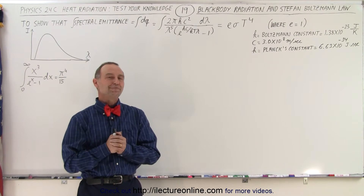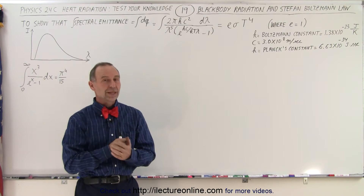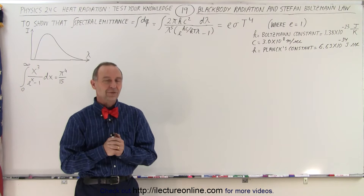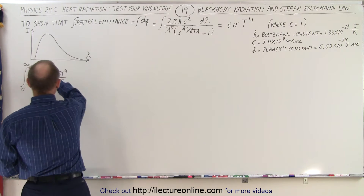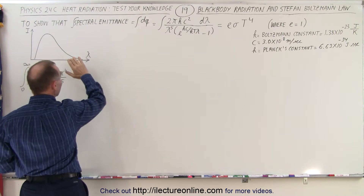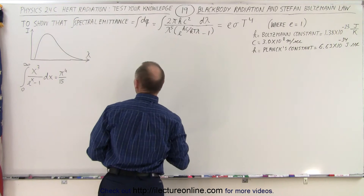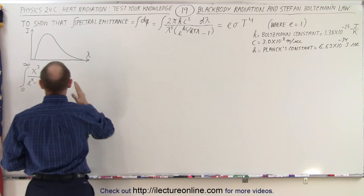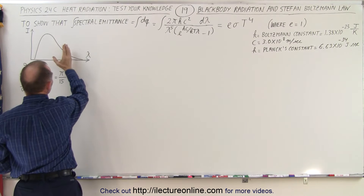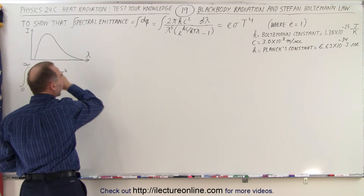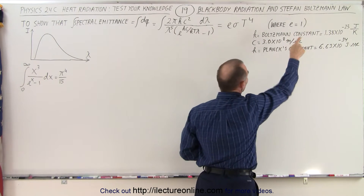Welcome to our lecture online. In this video we're going to do something really interesting. We're going to take a look at the black body radiation curve, and here we have the equation describing that curve. It turns out that if we integrate over the entire curve we get the intensity according to the Stefan-Boltzmann law.